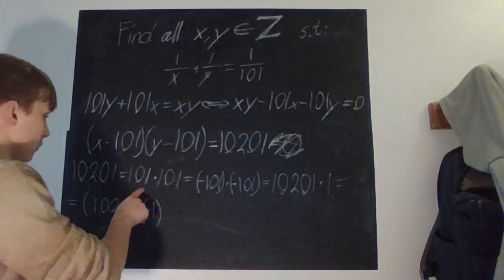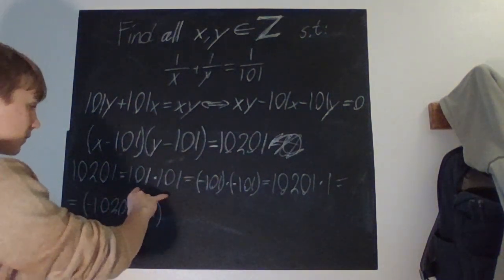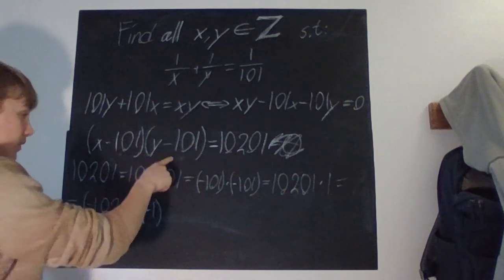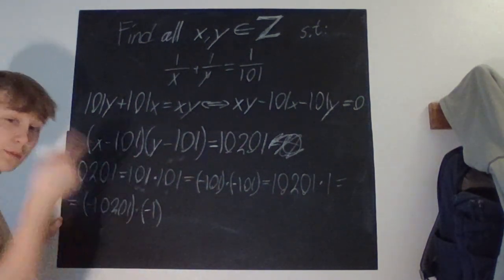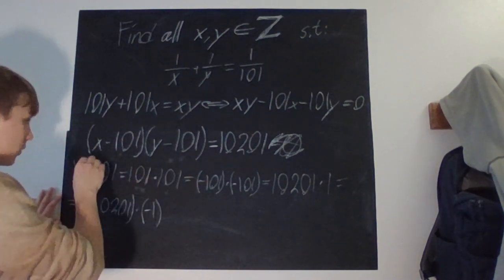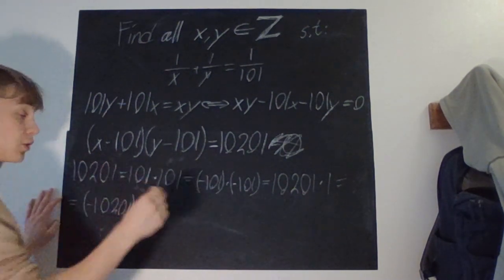Okay, so x and y, we want both parentheses to be equal to 101. So, what are x and y? Well, they're the same, obviously, and they are 202.